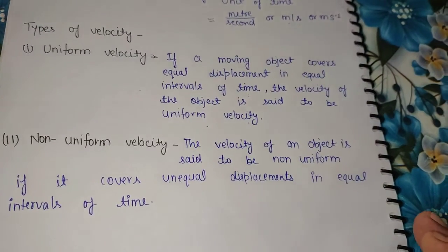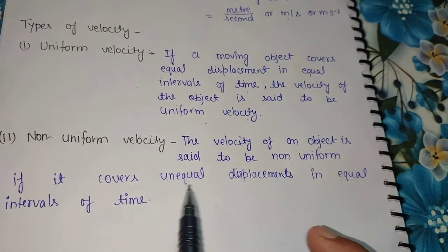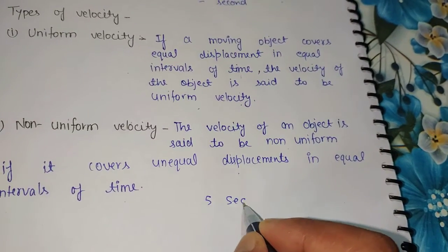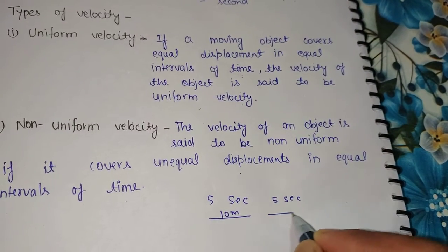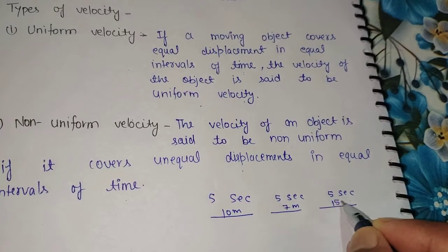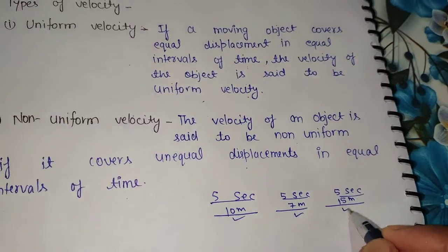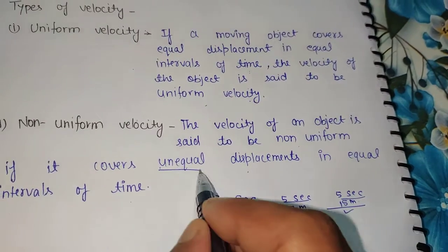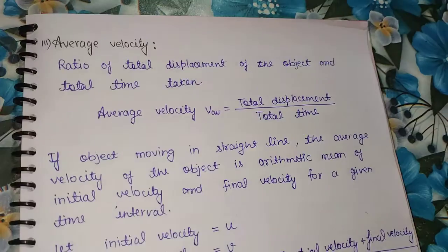Non-uniform velocity: the velocity of an object is said to be non-uniform if it covers unequal displacement in equal intervals of time. For example, in the first 5 seconds it covers 10 meters, in the next 5 seconds 7 meters, and in the next 5 seconds 15 meters. The time interval is the same — 5 seconds — but the displacement is unequal: 10, 7, and 15 meters. So this velocity is known as non-uniform velocity.